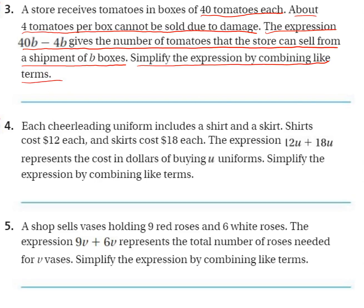Simplify the expression by combining like terms. They give you a lot of information here, but look, this is really all we're doing — simplifying the expression. They gave us the expression 40B minus 4B. So really all we're doing is taking 40 minus 4 and adding a B behind it. So 40 minus 4 is 36, and then we add a B behind it.